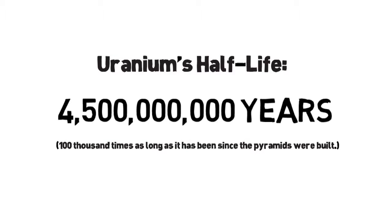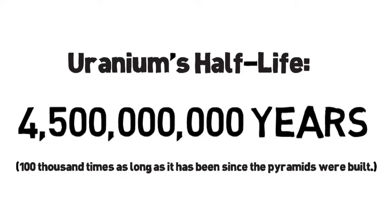For uranium, the time it takes for half of it to decay to lead is about 4.47 billion years. And it turns out that's actually a really convenient half-life for studying Earth processes. They're sort of on the same scale.